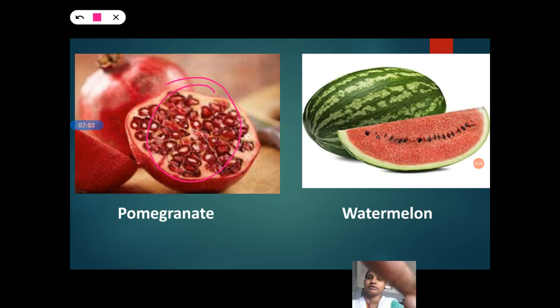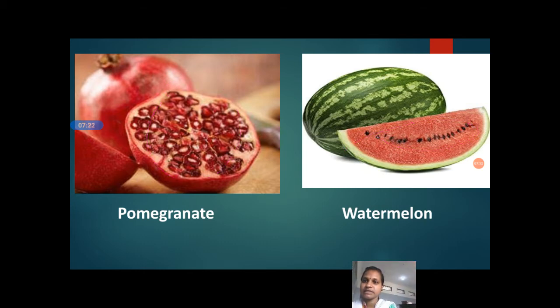Watermelon. Watermelon. This one is a watermelon. See here. These are the seeds. Here we can see more seeds. Not three, four. Here we can get many more seeds. So, these are the examples for the many seeds.